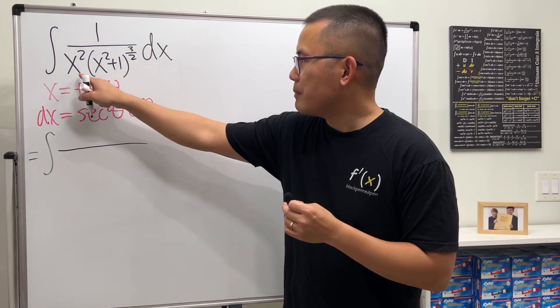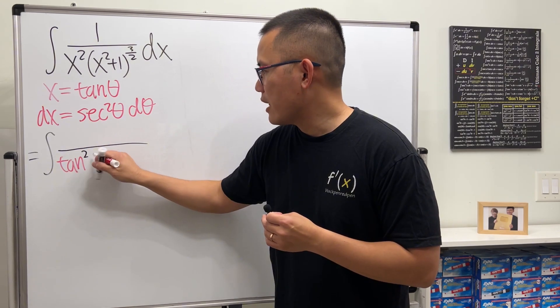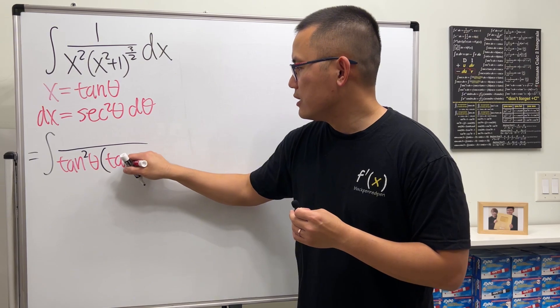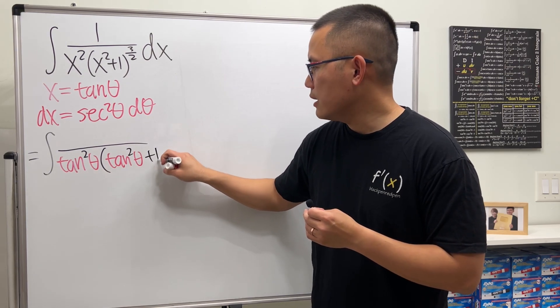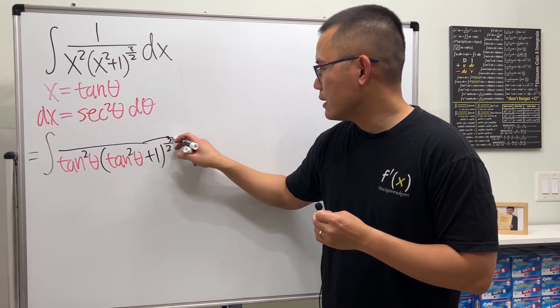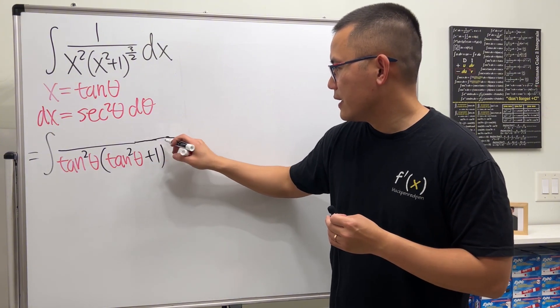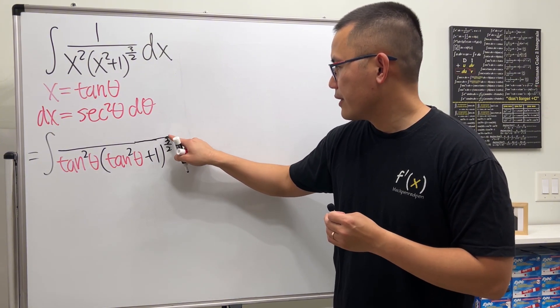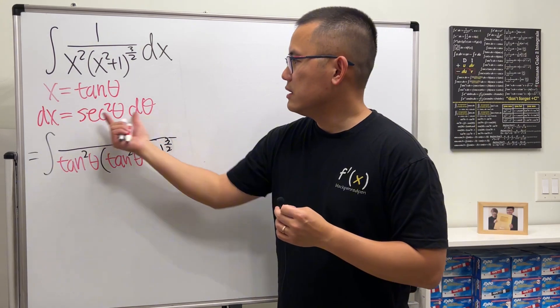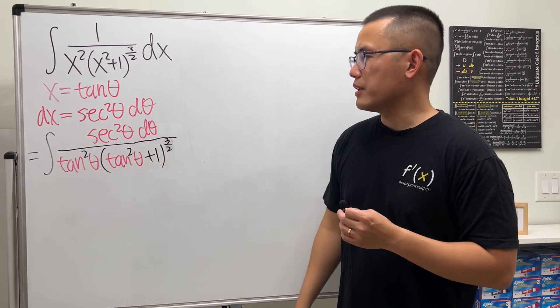Now let's just plug in everything into the original integral. On the bottom this is tangent squared theta, and then times tangent squared theta plus 1, raised to the 3 over 2 power. On the top we have 1 times dx, but dx is secant squared theta d theta.